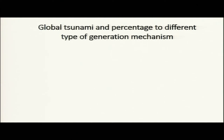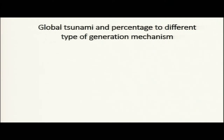Here we see the global distribution of tsunami and percentage of different generation mechanisms. Tsunamis can be generated from earthquakes, volcanic eruptions, or landslides. This diagram shows that 70 percent of tsunamis are from the Pacific Ocean — covering Japan, South Pacific Islands, North and Central America, South America, Russian Federation, Indonesia, Alaska, Hawaii — while 9 percent are from the Indian Ocean, 6 percent from the Caribbean and Atlantic, which experience fewer tsunamis than the Pacific.